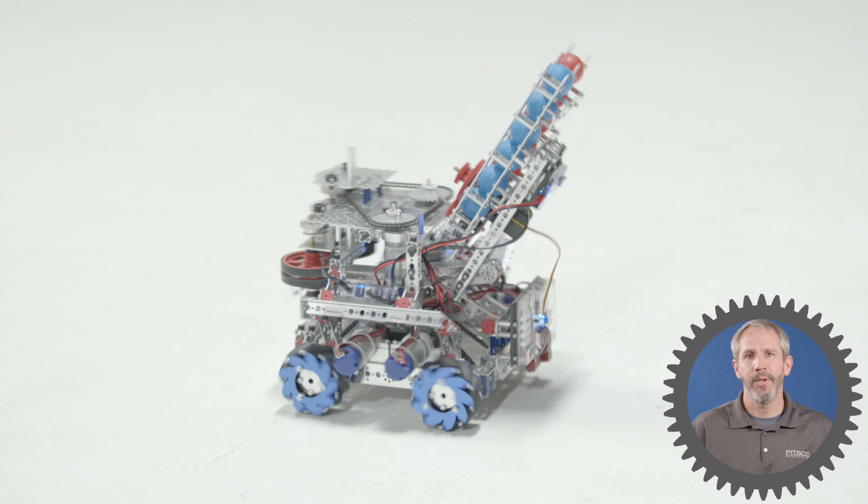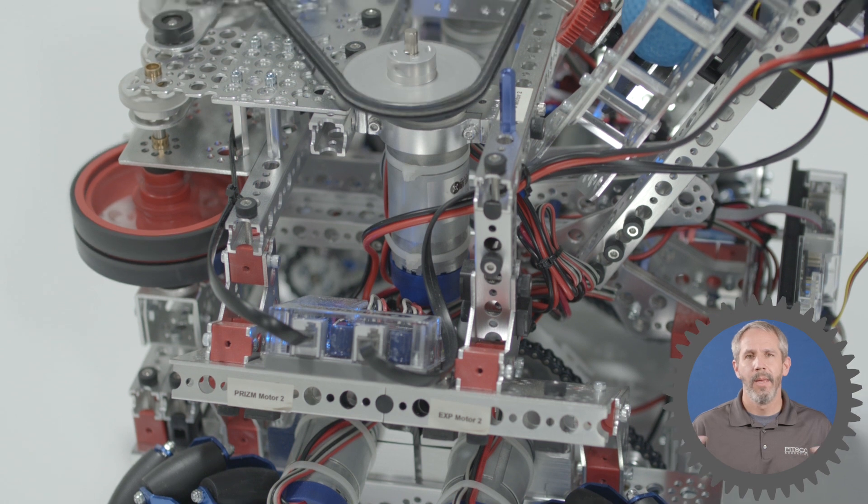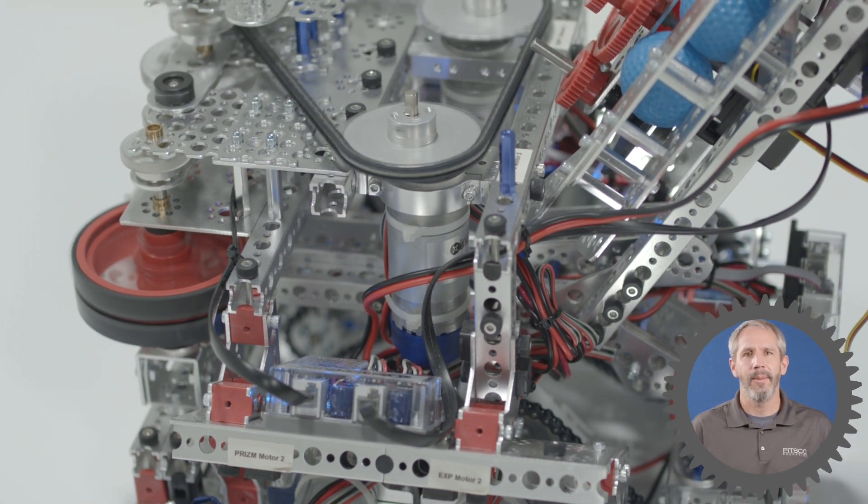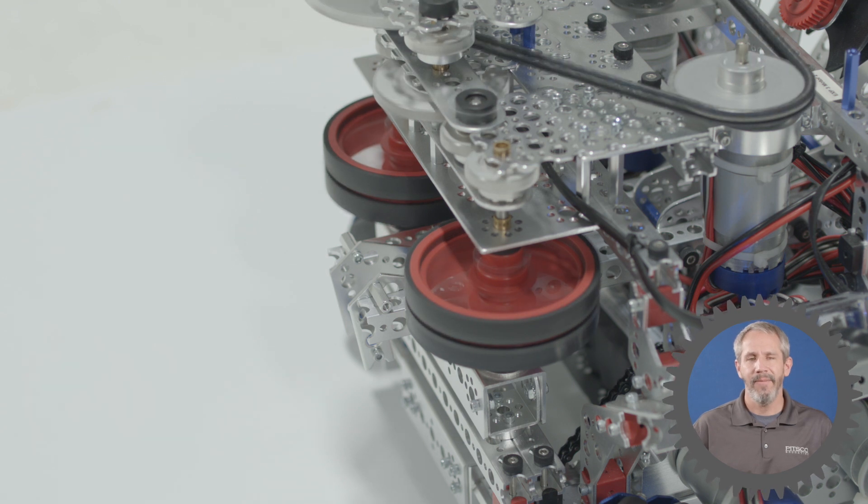There are a lot of different types of shooting mechanisms and we're going to look specifically at two of those today. The first is this flywheel system, and you see this a lot used on baseball pitching machines or softball pitching machines, but it consists of these two wheels up here that spin and those are driven by Torquenado motors.